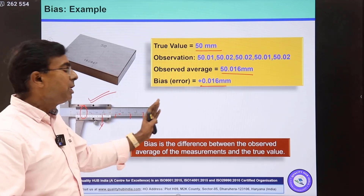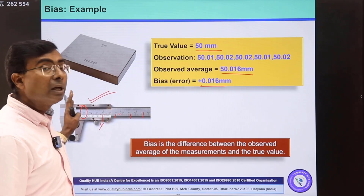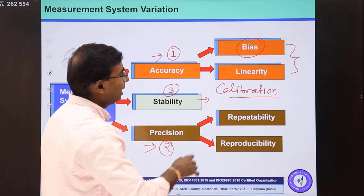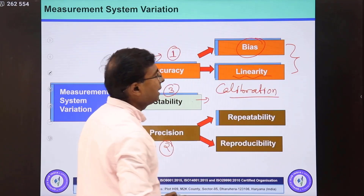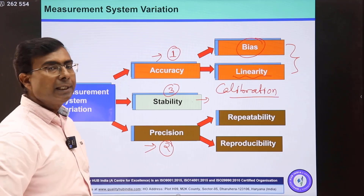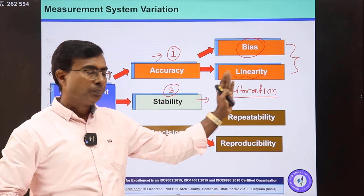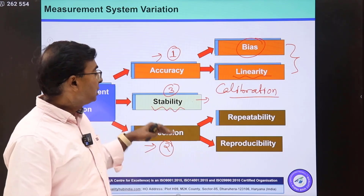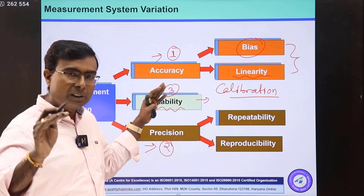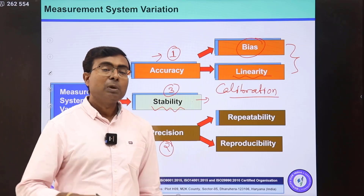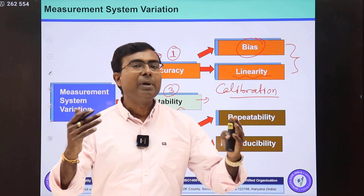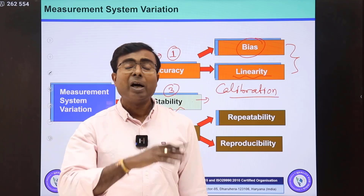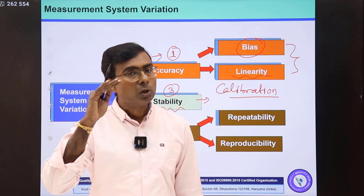If the bias throughout the measuring range of the instrument is zero, we can say our instrument is linear. Bias is also called error, and error throughout the measuring range of the instrument is called linearity. Stability is the study of bias at different time zones. The definition of stability is how the process is behaving over an extended period of time. The concept of stability is the same in MSA and in SPC — in SPC we use control charts to check the stability of the process and to find the presence of any special causes.